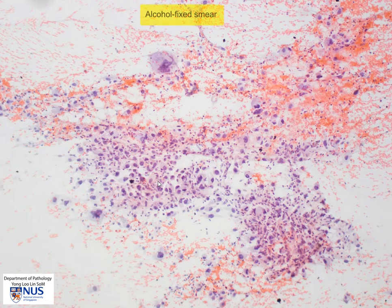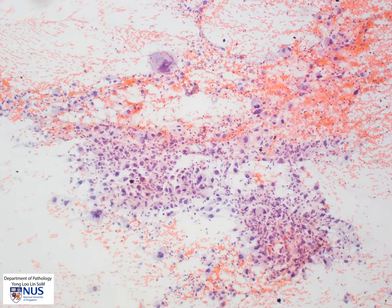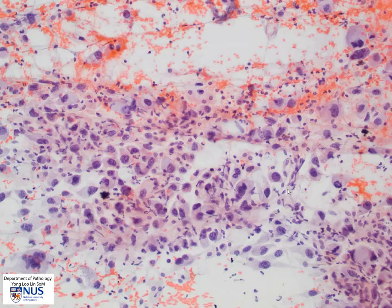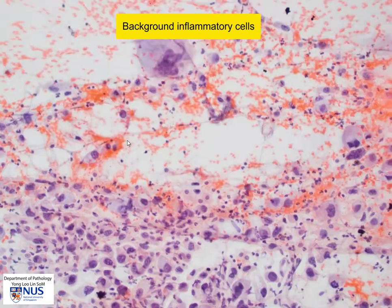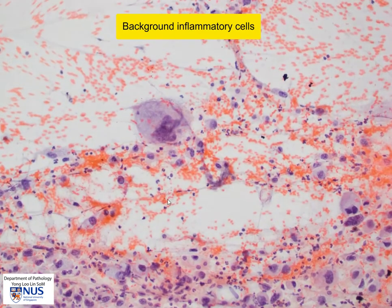Here is the alcohol fixed smear and we can see again these very large fairly dispersed cells. We're not seeing any papillary formations or any micro follicular structures, and there are also huge bizarre malignant cells. Again in this particular smear we can see quite a lot of small inflammatory cells in the background in between the malignant cells.